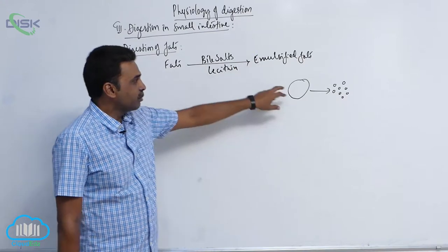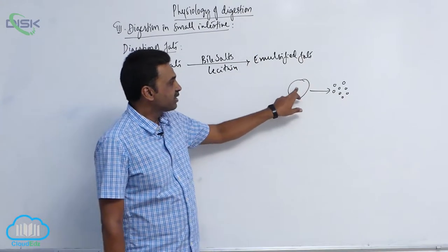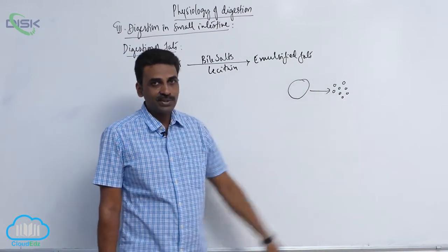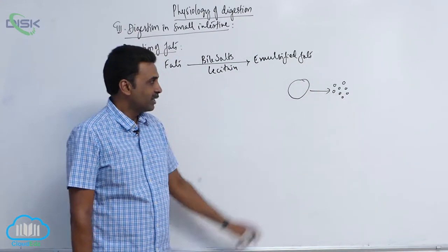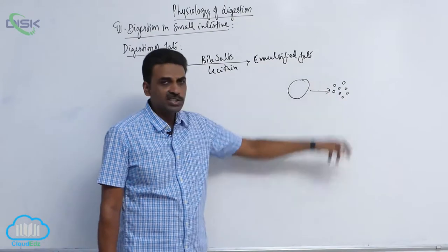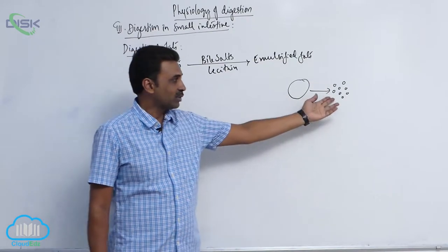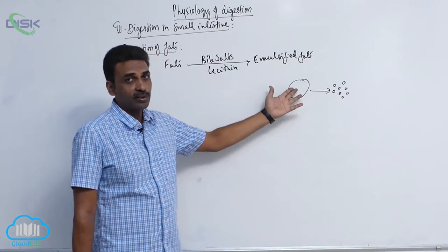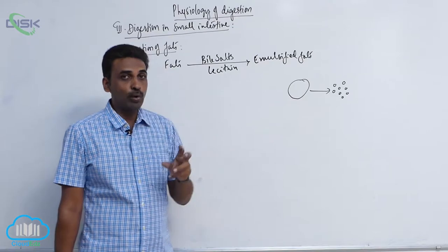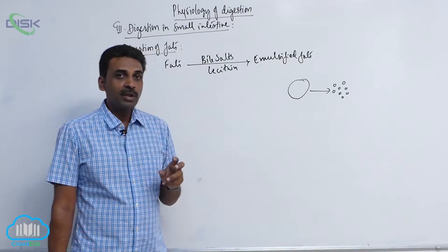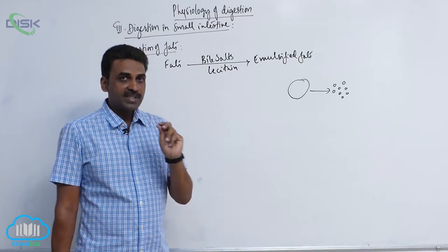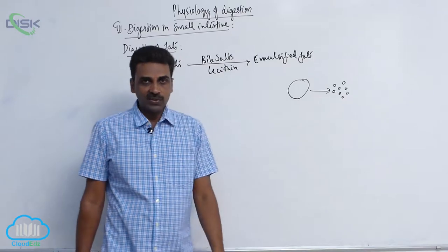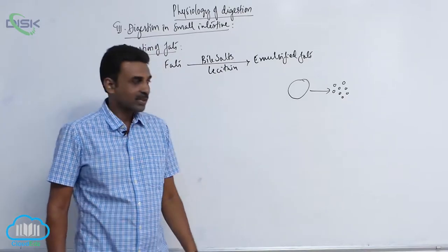At the time of emulsification, the high surface tension is reduced. Because surface tension is reduced, lipases can now act on the fat. Lipases cannot directly act on the large fat globule — lipases can only act on emulsified fats.